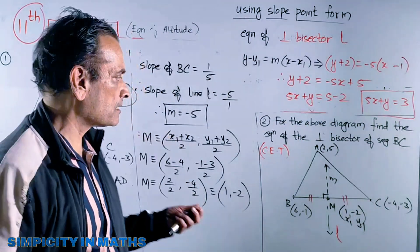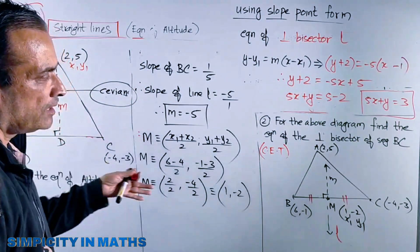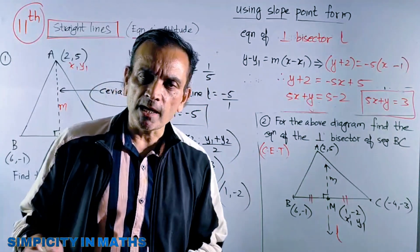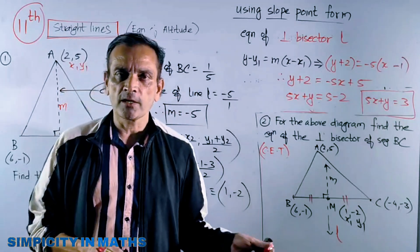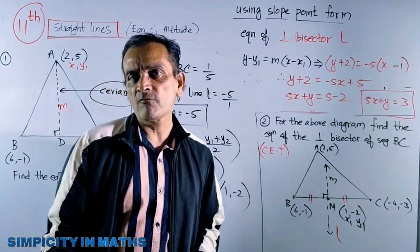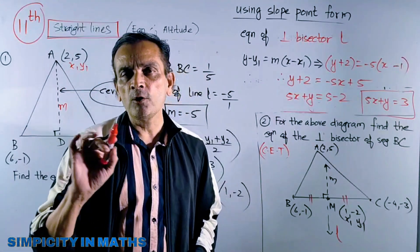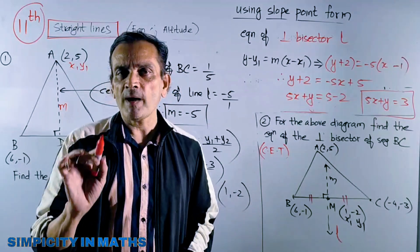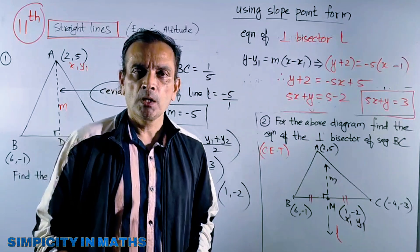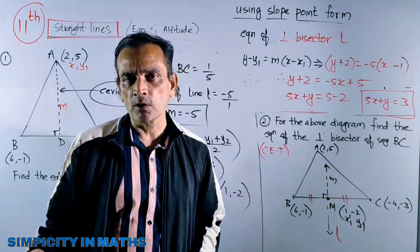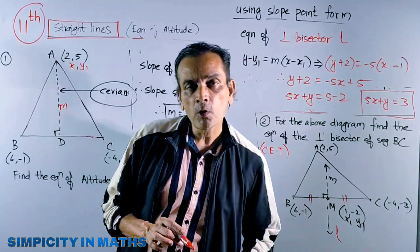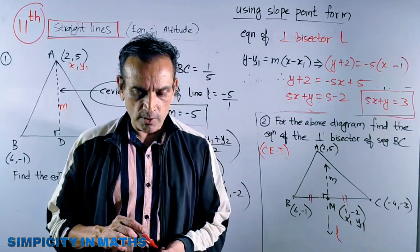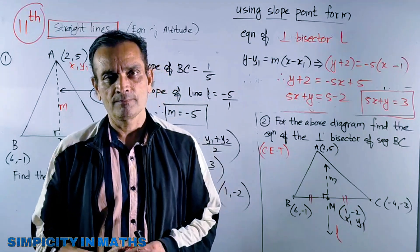This type of sum was asked in last year's college exam, and two years back this sum was asked for CET — see the difference. Remember the basic formulas: m1 into m2 equals minus 1 for perpendicular lines, and m1 equals m2 for parallel lines. These are basic concepts used later on in 12th standard also. Solve the sums and enjoy — meet you in another two days. Bye!